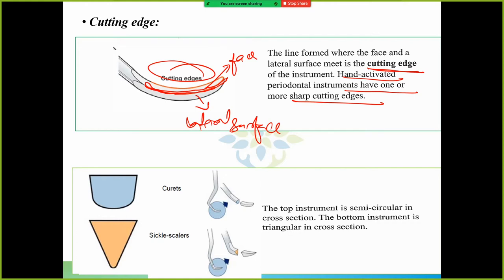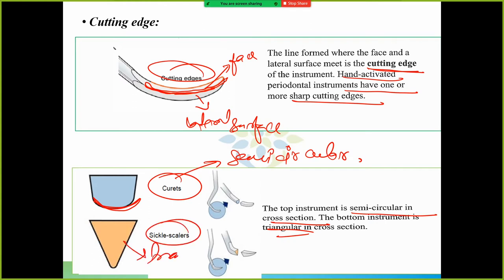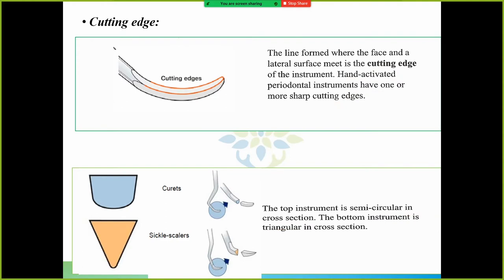Cross sections: The top instrument is semicircular in cross section and the bottom instrument is triangular in cross section. Curets are semicircular - Gracey curet, universal curet, many types - semicircular in cross section. And sickle scalers are triangular. This part, this cross section is triangular. See this part - this is semicircular in cross section and this sickle scaler is triangular in cross section.